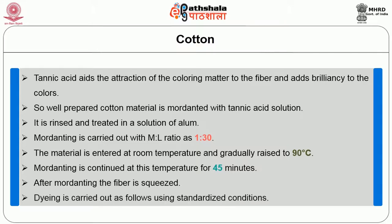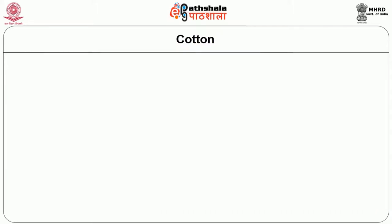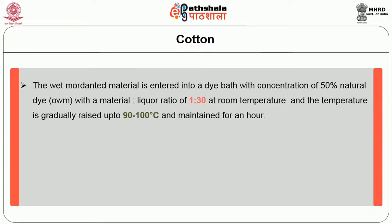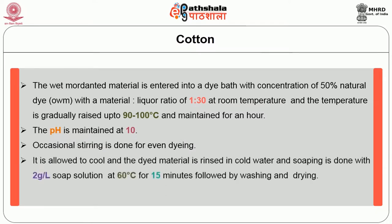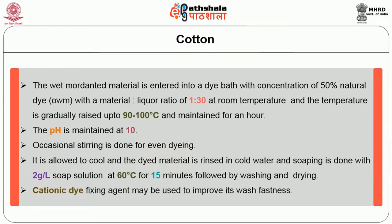Dyeing is carried out using standardised conditions. The wet mordanted material is entered into a dye bath with a concentration of 50% natural dyes on weight of material, with a material liquor ratio of 1 to 30 at room temperature. The temperature is gradually raised up to 90 to 100 degrees centigrade and maintained for an hour. The pH is maintained at 10. Occasional stirring is done for even dyeing. The dyed material is rinsed in cold water, and soaping is done with 2 g/L soap solution at 60 degrees centigrade for 15 minutes, followed by washing and drying. A cationic dye fixing agent may be used to improve wash fastness.